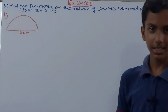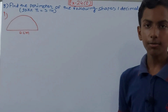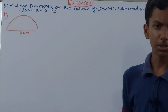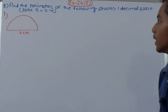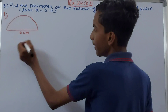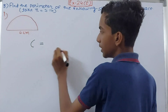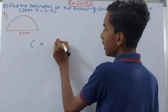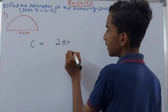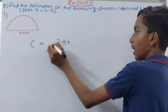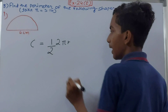We don't have complete circles in this question — we have parts of circles. First we have a semicircle. The circumference of a full circle is 2πr, and for a semicircle we divide by 2, giving us one-half of 2πr.